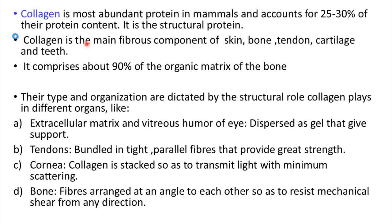Collagen is the most abundant protein in mammals and accounts for 25 to 30 percent of the total protein content. It is a structural protein and the main fibrous component of skin, bone, tendon, cartilage, and teeth. It comprises about 90 percent of the organic matrix of bone.